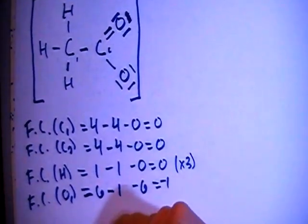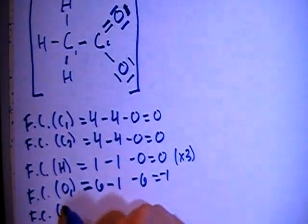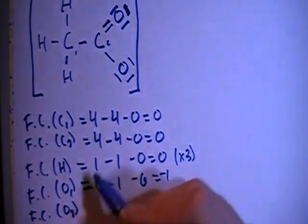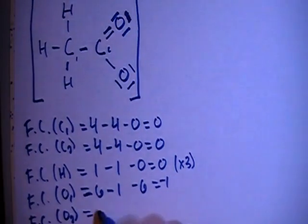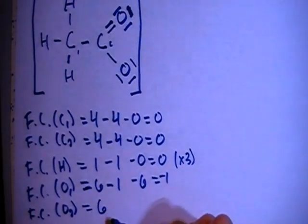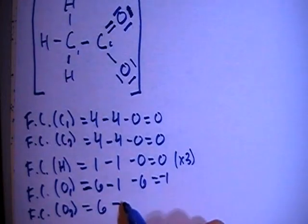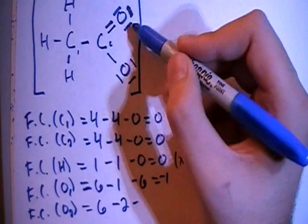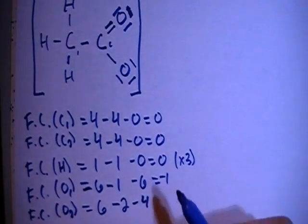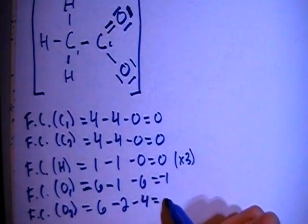And now finally, the formal charge on O sub 2, the oxygen with a double bond, so this oxygen here. That's going to be 6 valence brought in, minus 2 bonds, minus 1, 2, 3, 4 non-bonding electrons for a formal charge of 0.